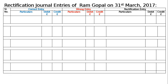The question is, there was an error in the trial balance of Ram Gopal on 31st March 2017 and the difference in the books was carried to the suspense account. On going through the books, you find that we have to pass journal entries to rectify the above errors and state what amount was carried to the suspense account.